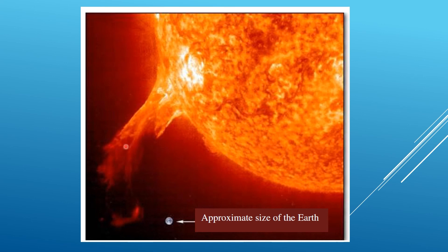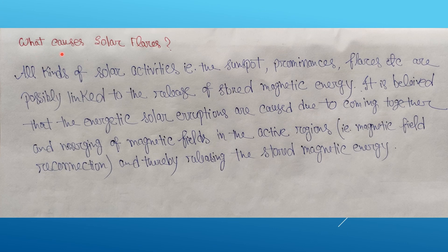The question is: what causes solar flares? All kinds of solar activities — sunspots, prominences, flares, etc. — are possibly linked to the release of stored magnetic energy of the sun. It is believed that energetic solar eruptions are caused by the coming together and merging of magnetic fields in active regions, that is, magnetic reconnection, thereby releasing the stored magnetic energy. So all of these solar activities are more or less caused due to the sun's strong magnetic field.